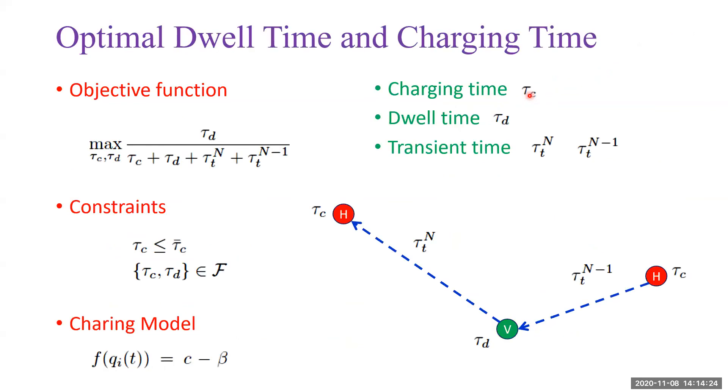Our last task is to maximize the dwell time τ_d and minimize the transient time during a cycle. Here we define the duty cycle as a function of these times. Let's remind you that τ_c is charging time, τ_d is dwell time, and τ_t^{N-1} is transient time. We have two constraints. The first constraint requires an agent to leave the charging station once its battery is fully charged. The second condition ensures that the charging time and dwell time must satisfy the feasibility constraint.